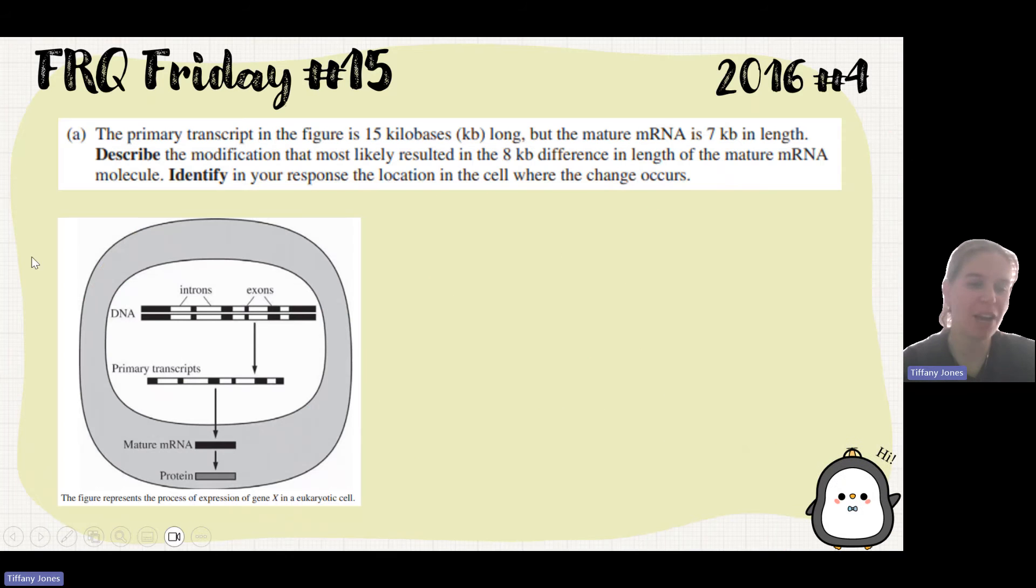They give us this diagram and they're showing us the figure represents the process of expression of gene X in a eukaryotic cell. The primary transcript in the figure is 15 kilobases long, but the mature mRNA is 7 kilobases in length.